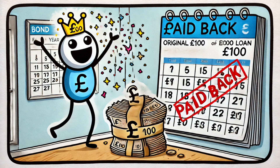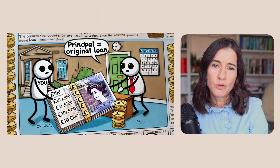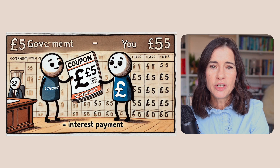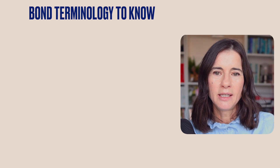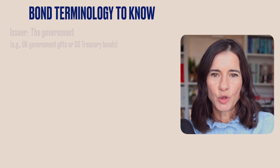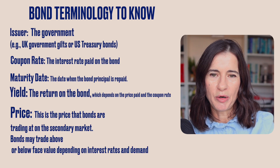The full amount that you originally gave them, you'll get that back at the end of the bond term, which is known as the maturity date. The amount of money — the loan that you are giving to the government — is called the principal, and the annual rate of interest on a bond is called the coupon. The coupon is expressed as a percentage of the face value of the bond, which is often called the par value. The key terms to understand about bonds are: the bond issuer, the coupon rate, the maturity date, the yield, and the price.